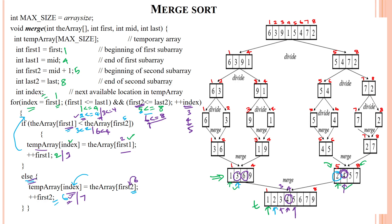For loop index is now 5. Condition: 3 less than or equal to 4 is true, and 7 less than or equal to 8 is true. Array of first index 3 is 6, and array of second index 7 is 5. So 6 less than 5 is false — else portion executes. Value 5 is assigned into temporary array at index 5. Second array's first index is incremented from 7 to 8. Coming back: 3 less than or equal to 4 is true, 8 less than or equal to 8 is true.